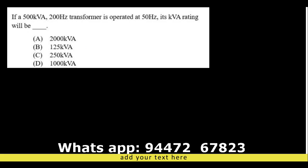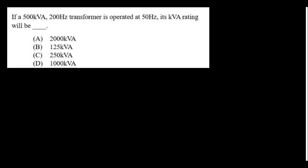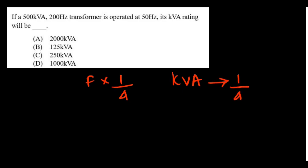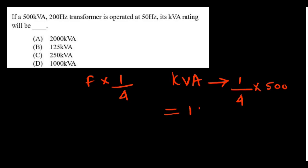A 500 kVA transformer rated at 200 Hz is operated at 50 Hz. The frequency has reduced by 4 times, so the kVA rating also reduces by 4 times. Therefore, the new kVA rating is (1/4) × 500 = 125 kVA.